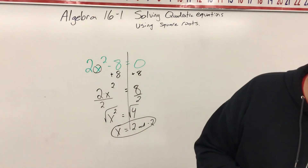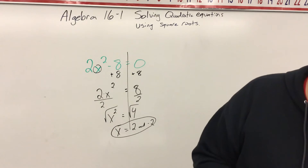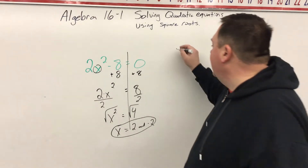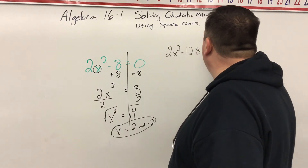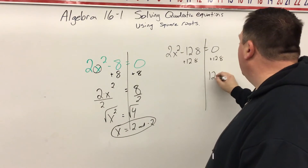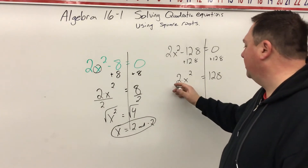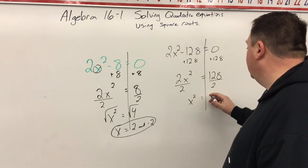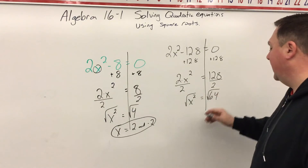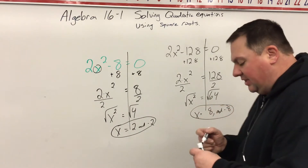Go ahead and try numbers 3 and 4 in your workbooks, and then I will go over number 4, which is a little bit harder. So number 4: we have 2x² minus 128 equals 0. We're going to add 128 to both sides, so 128 equals 2x². Now we take the inverse operation of multiplying, dividing by 2 on both sides, giving us x² equals 64. To undo the squaring, we take the square root of both sides, so x equals positive 8 and negative 8. And those are your answers for that.